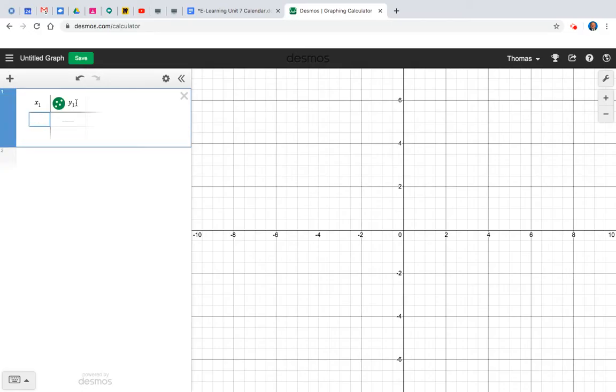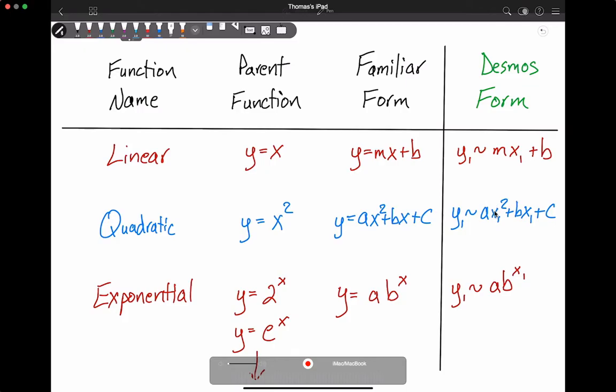And then finally, exponential. You could have 2 to the x, 3 to the x, where it doubles or triples each jump. Or you could have e to the x, all kinds of numbers as far as the base is concerned, and those are in other videos in this unit.